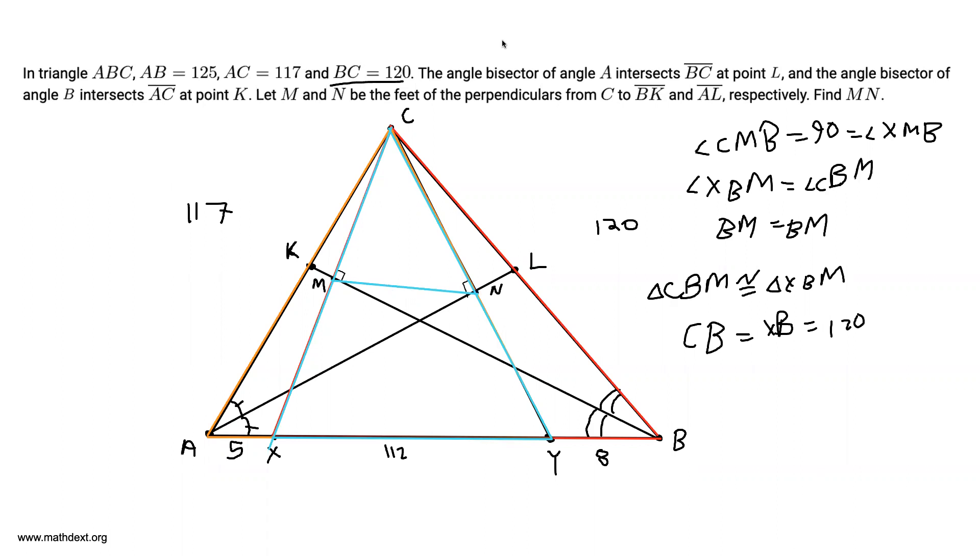We can actually find this length over here. How are we going to do that? We see that CM is equal to half CX, and we see that CN is equal to half CY.